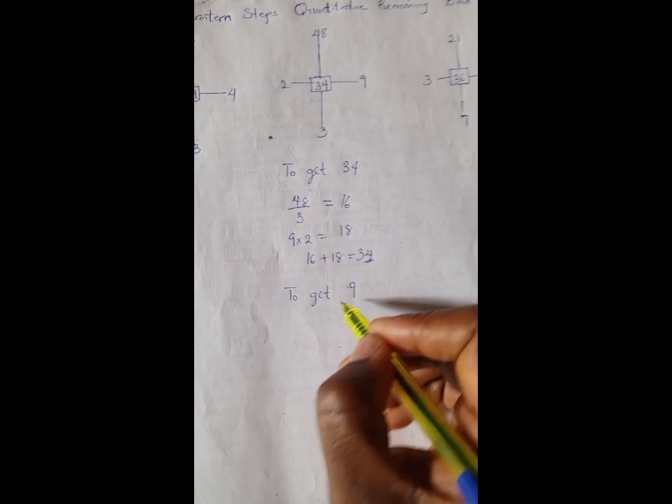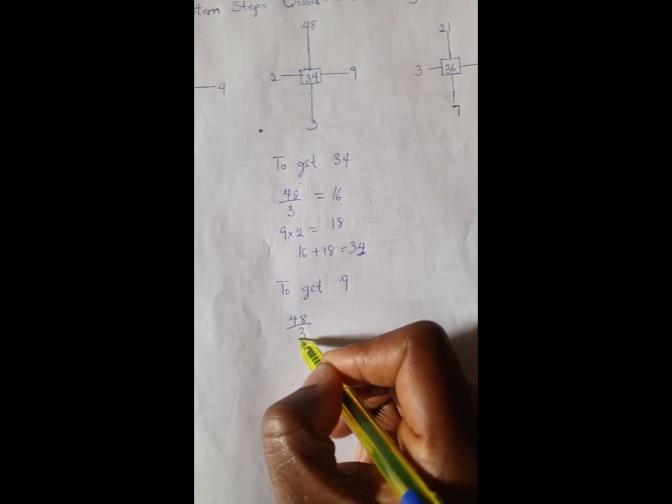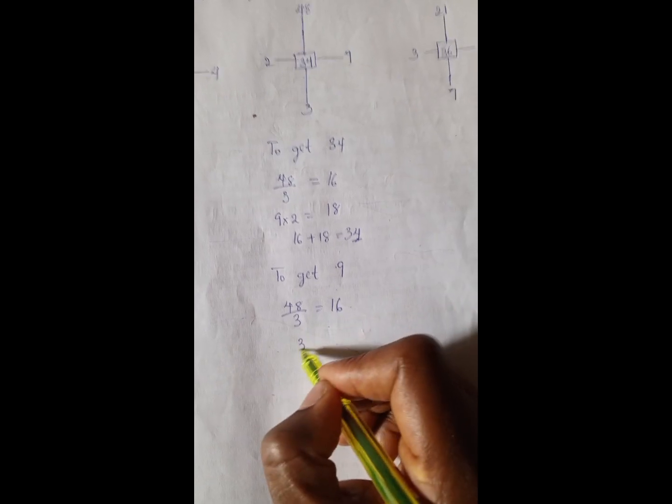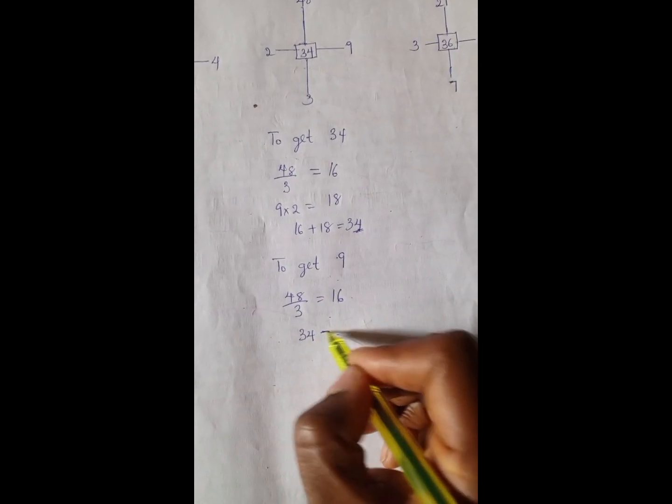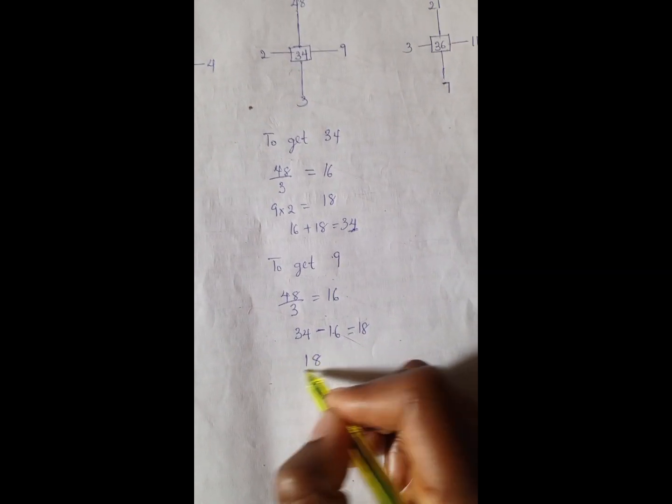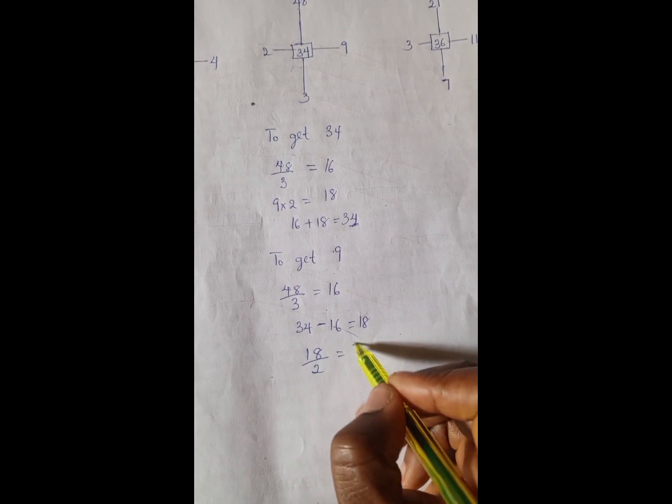So we have 48 divided by 3 is 16. So 34, which is what is available, minus 16 is 18. So 18 divided by 2 is 9. That's for 9.